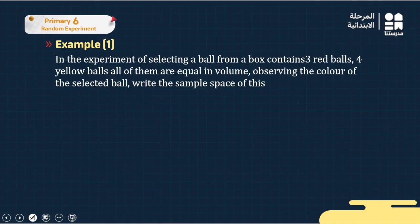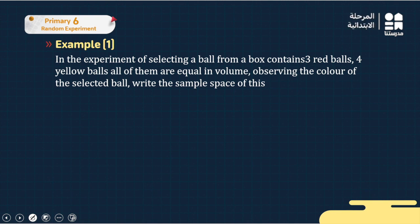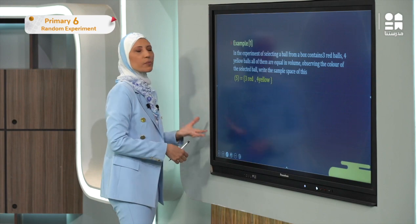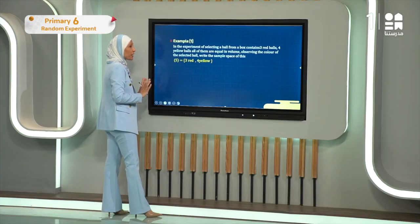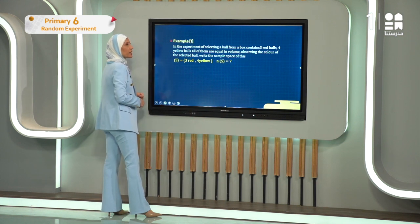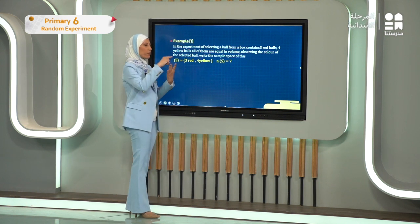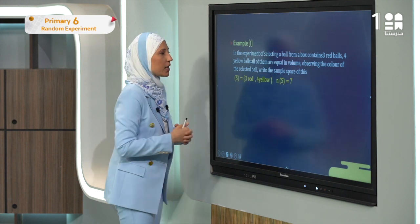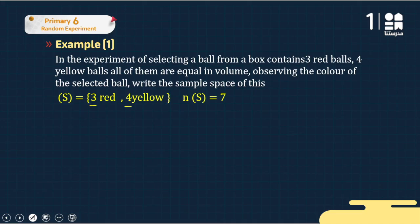Exercise: selecting a ball from a box containing three red balls and four yellow balls, observing the color. The sample space has two possible colors: red or yellow. However, n(S) = 7 because there are 3 red and 4 yellow balls — seven total outcomes. You can write it as {red, red, red, yellow, yellow, yellow, yellow}.